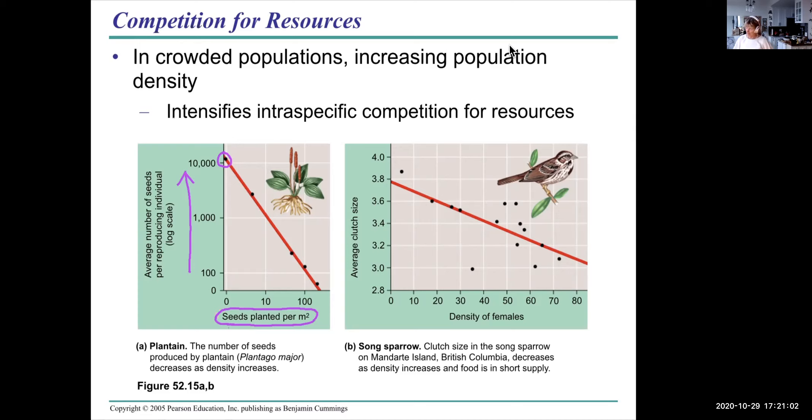This is a case of the average clutch size, in other words how many eggs birds have, and the density of females. This is Mandarte Island again in BC. The clutch size decreases with a number of females. Because again food is in shorter supply. For birds it takes a lot of food and energy to produce eggs.